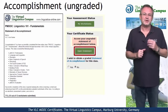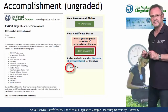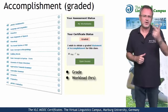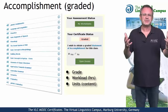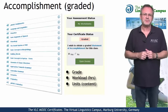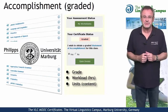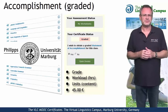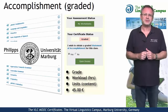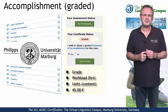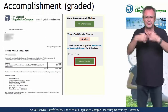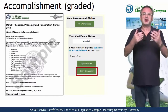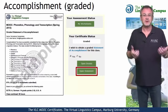If you want to obtain a graded statement of accomplishment, select Yes. This most advanced option of certification includes your precise grade, the workload in hours, and a complete list of all the tasks you successfully submitted. This graded statement of accomplishment is issued by Marburg University in conjunction with the Virtual Linguistics Campus, and it involves a fee of currently 45 euros. Once you have satisfied the conditions and decided to obtain such a certificate, you first have to open the invoice and transfer the money to Marburg University. Once your payment has been accepted, you can download your personal graded statement of accomplishment via mouse click.